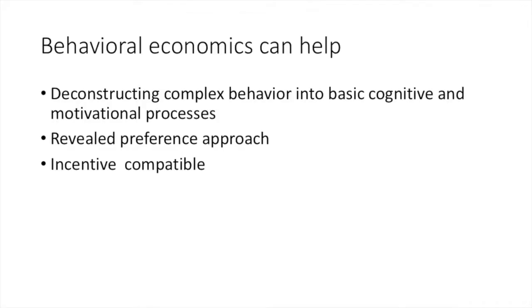Economics provides us with very useful constructs that enable us to deconstruct complex behavior into basic cognitive, emotional, and motivational processes. We can use the revealed preference approach as a starting point — having subjects make choices between different options, changing different parameters to get at their preferences and the processes that underlie their complex behavior. We can do this in an incentive-compatible manner, paying subjects based on their choices to encourage truthful behavior, as if they would behave in the real world.